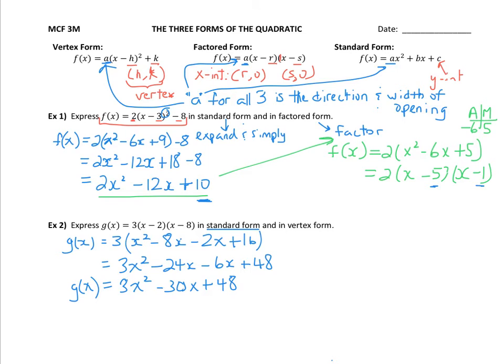Now to get vertex form, it's not easy to go directly from the standard form to vertex form. We are going to learn how to do that, but that's in our next lesson. We're going to look at this factored form. We're going to go back to that, and we're going to work with the fact that we know that the zeros are at positive 2 and positive 8.